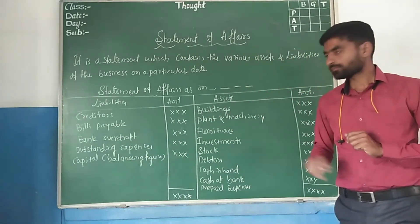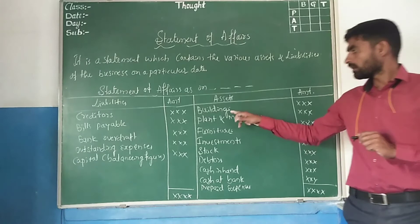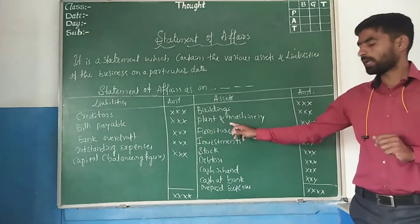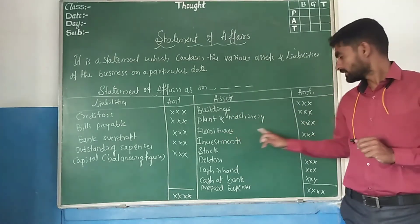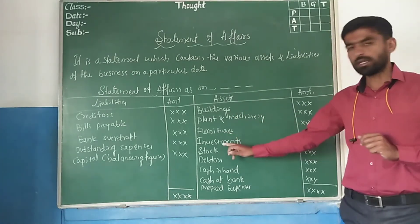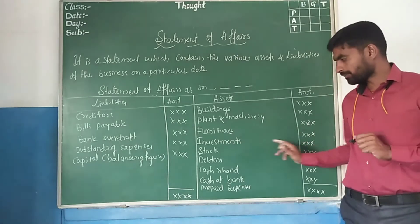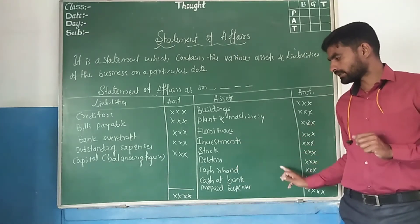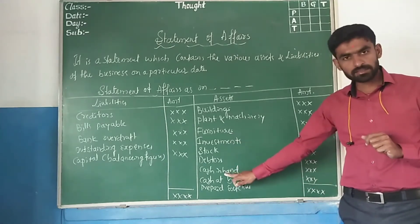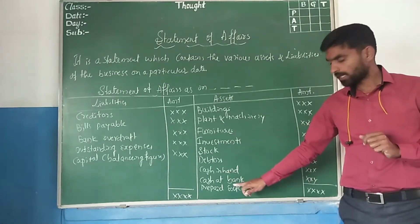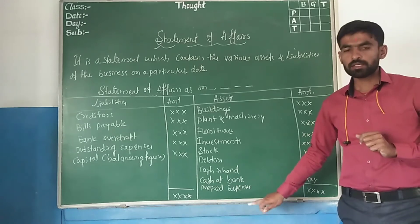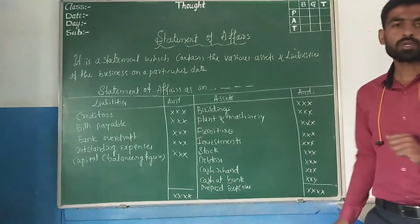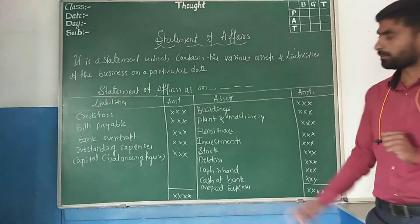On the asset side, we have: building, plant and machinery, furniture, investment, stock, debtors, cash in hand, cash at bank, and prepaid expenses. This covers all items on the asset side.